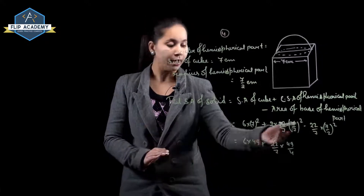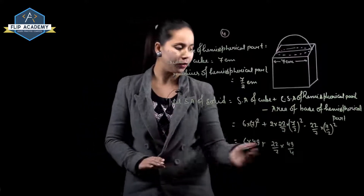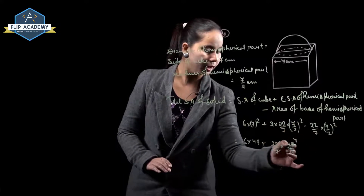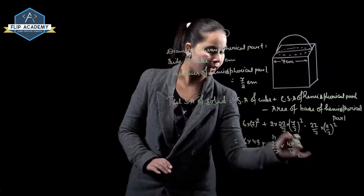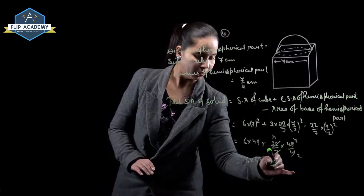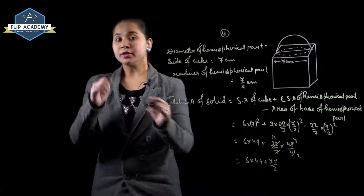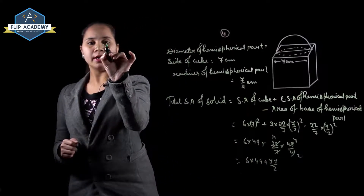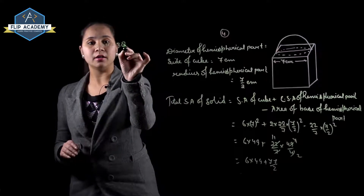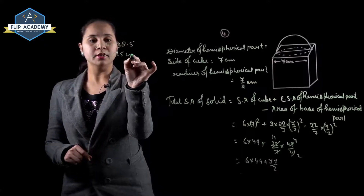With pi value 22 upon 7 and r value 7 upon 2, we get 6 into 49 plus 7 upon 2. So 6 into 49 is 294, plus 77 upon 2 is 38.5, and the total is equal to 332.5 centimeters squared. Question number 4 is complete.